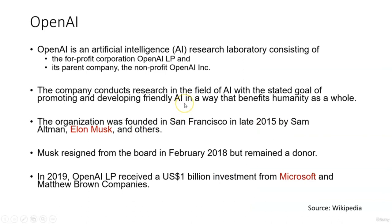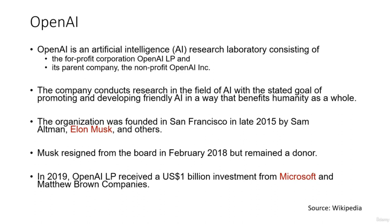OpenAI is basically an artificial intelligence company — more than a company, we can say it is a research lab. It consists of two entities: a for-profit entity and a non-profit entity. This company conducts pioneering research in the field of artificial intelligence, wanting to develop and promote AI in a manner that benefits the whole of mankind. It was founded in the United States in 2015 by Elon Musk and others, though Musk has since resigned from the board but continues to be a donor.